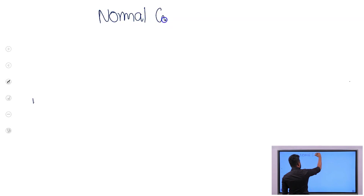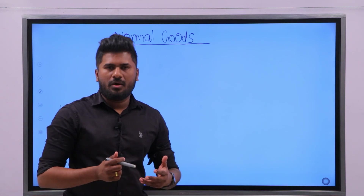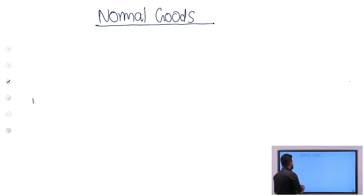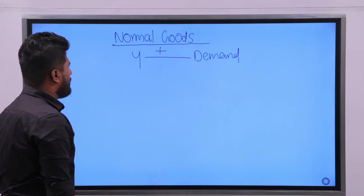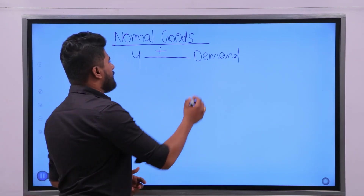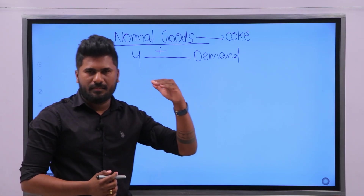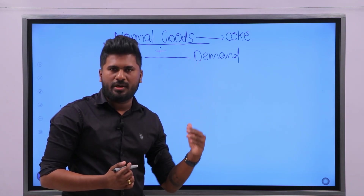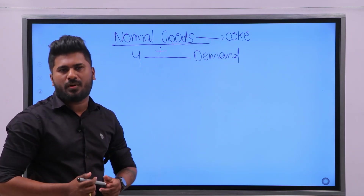First, let's discuss what is meant by normal goods. Normal goods can be identified as goods which have a positive relationship between income and demand. As an example, take a Coca-Cola bottle. When your income is getting higher, you demand more; when your income is lower, you demand less of that particular good.